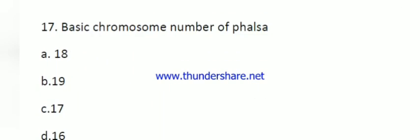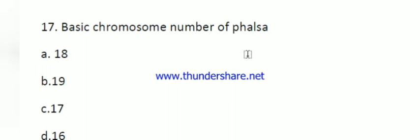Question number 17: basic chromosome number of Falsa. The options are 18, 19, 17, and 16. The chromosome number of Falsa is 2n = 2x = 36, meaning it is diploid in nature. Therefore the basic chromosome number is 18.